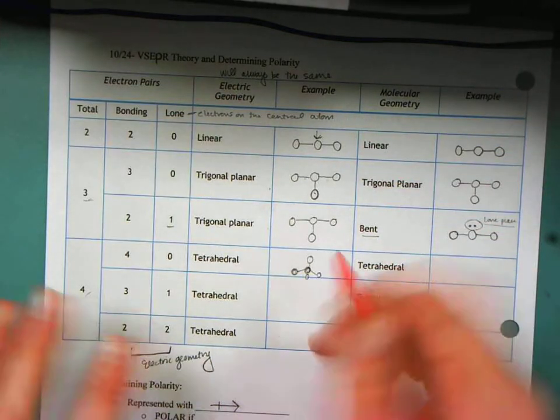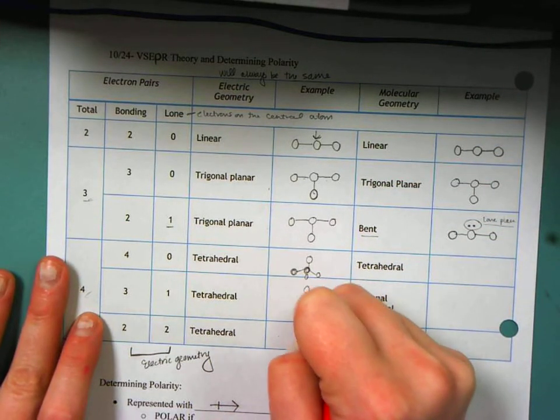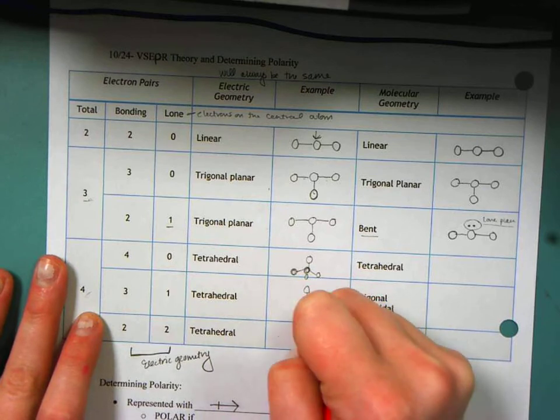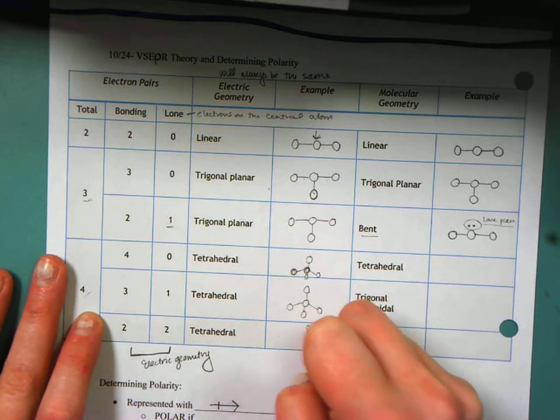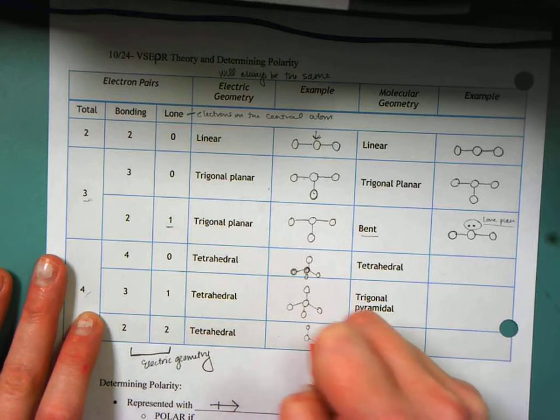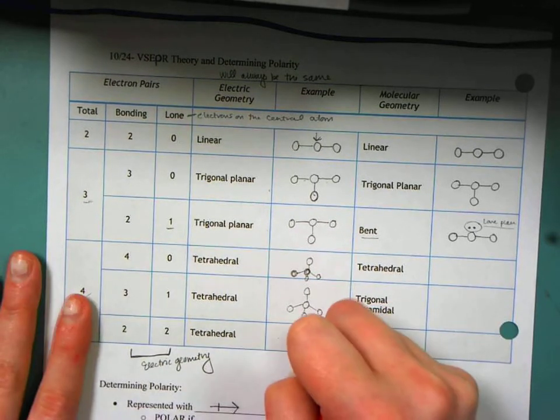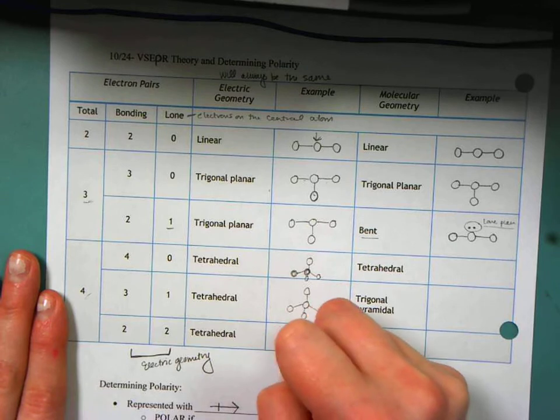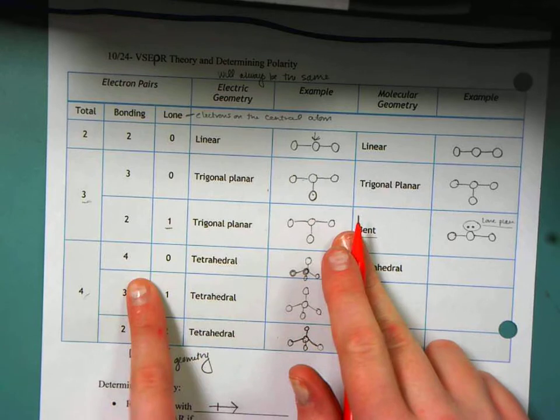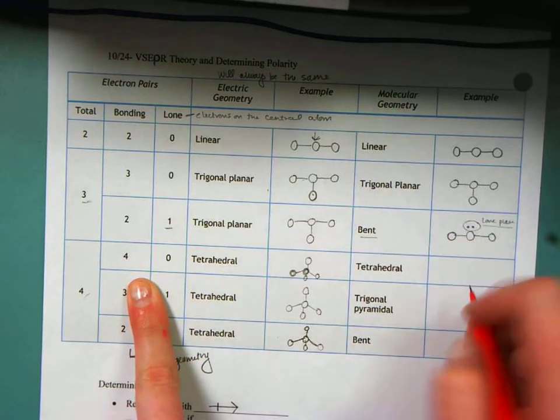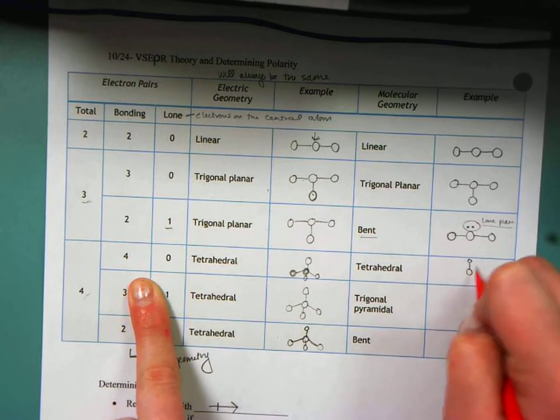So I know my electric geometries are all going to be the same, so I'll just go ahead and draw all of those for tetrahedral in the same fashion. I need four bonds. So those are all of my tetrahedral. Now, for my very first one, I've got 4O, so my molecular geometry, I'm going to draw the exact same thing.